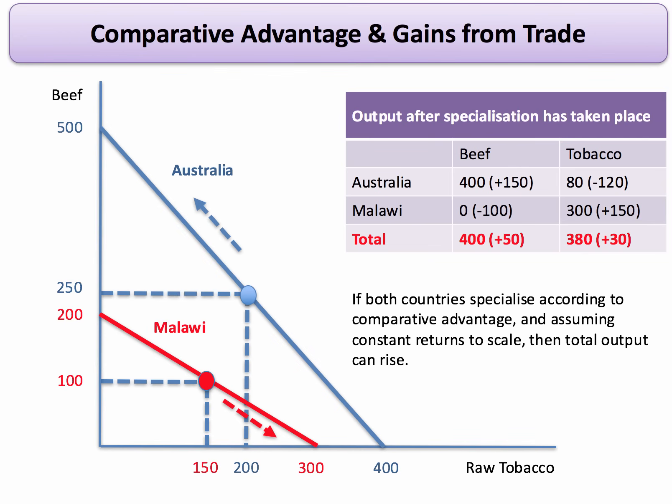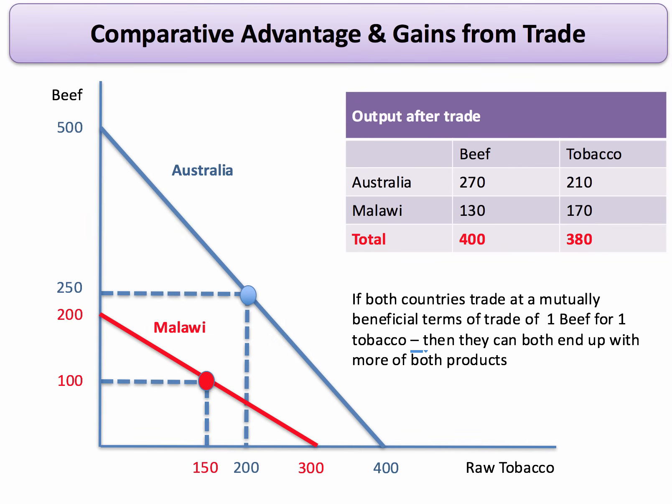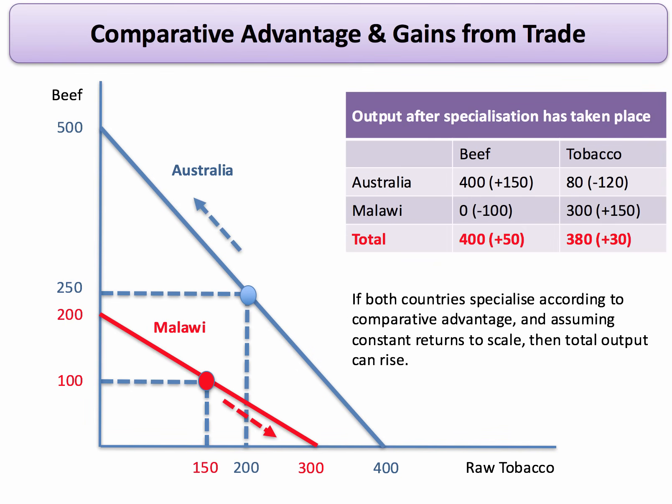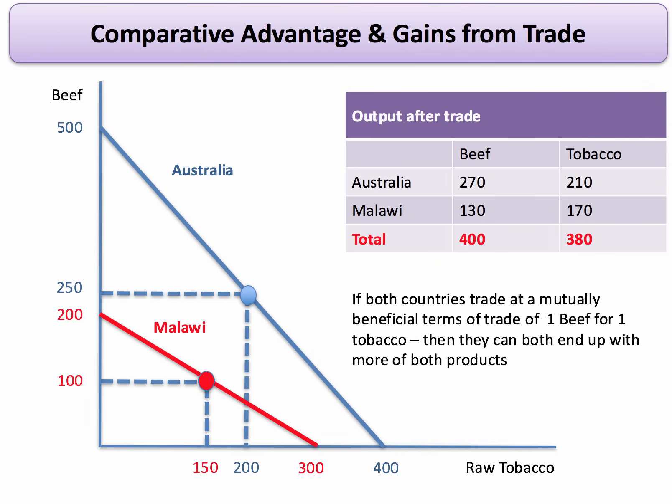We then need to think about trade. For trade to be beneficial, the terms of trade must lie within the opportunity cost ratios — somewhere between 5 over 4 and 10 over 15. One-to-one lies between those two ratios. If we trade at a mutually beneficial terms of trade of one for one, Australia exports 130 units of beef to Malawi, going down to 270 units of beef themselves.